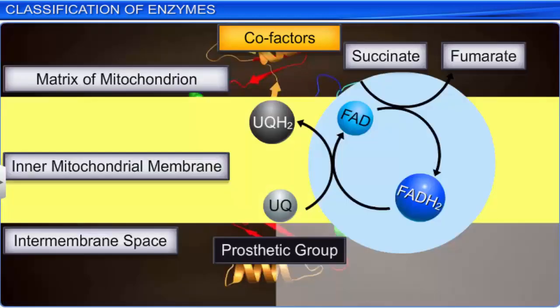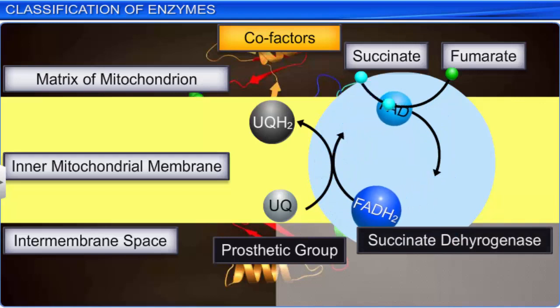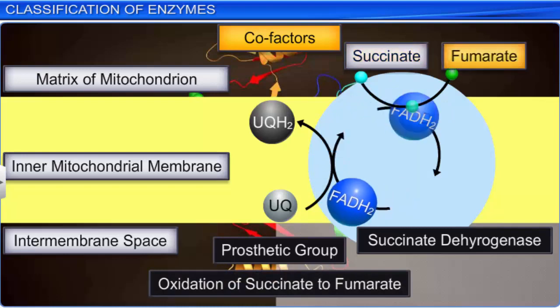Prosthetic groups are organic compounds that are tightly bound to the apoenzyme. For example, in the enzyme complex succinate dehydrogenase, FAD or flavin adenine dinucleotide is a prosthetic group that oxidizes succinate to fumarate in the eighth step of the citric acid cycle.